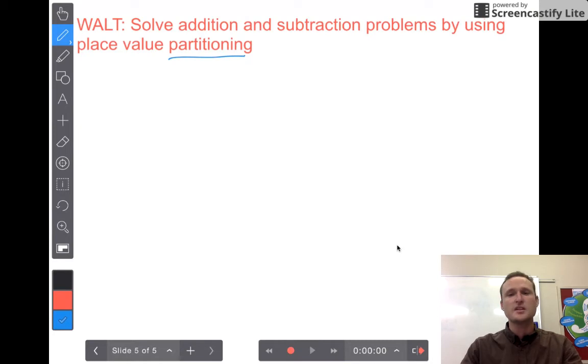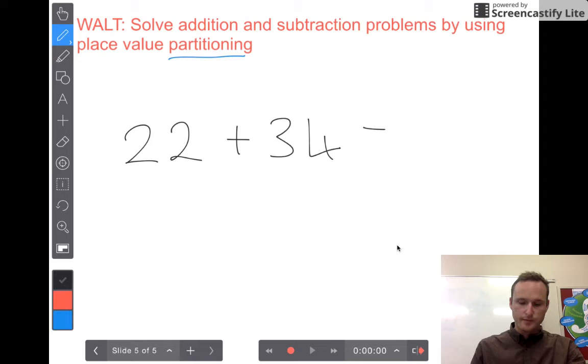Okay, so we're going to start with a couple of easier numbers, with just two-digit numbers, and we're going to start with, let's try 22 plus 34. Now off the top of my head I don't know what this is, but what I can use is place value partitioning to help me solve it a lot quicker and rewrite the question.